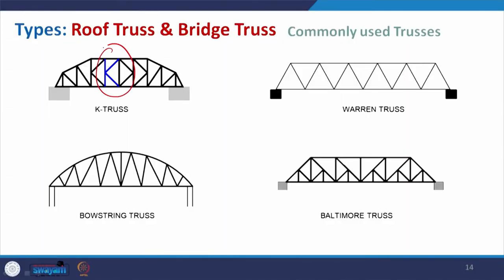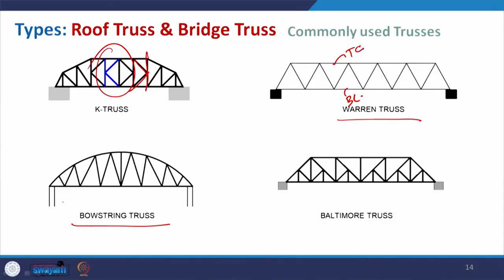The K truss has a complex formation where the members make the shape of the letter K. The Warren truss uses equilateral triangles placed one after another, with a top chord, bottom chord, and regular members. The bowstring truss has an arch form rather than a rectangular one, very common in rail bridges. The Baltimore truss is very complicated — vertical members are added, and to support those angular members, more small vertical and angular posts are added.